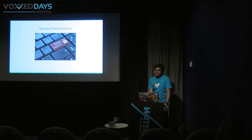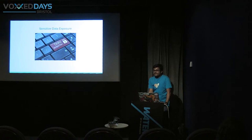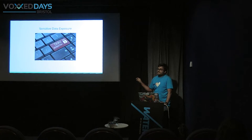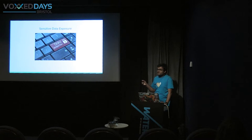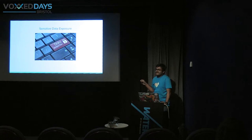Next is sensitive data exposure. Data can be classified in two ways: data at rest — data stored in servers — and data being transmitted, which can happen between server and server, or between server and browser. When this data is not stored or transmitted using proper encryption methods, such as using weak algorithms, that leads to sensitive data exposure.